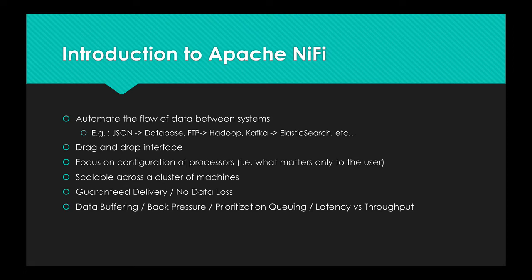The cool thing is that it can also be scaled to a cluster of machines. So if you need to increase your throughput, you can just add machines. There is also a really nice concept named guaranteed delivery, so you're not losing data, and that's a really good thing to have, especially in the data business. And finally, it handles buffering, back pressure, batching, prioritization of the queue, and optimization of whether you want to have latency or throughput.